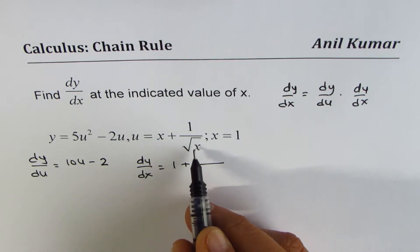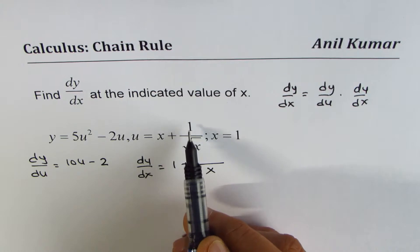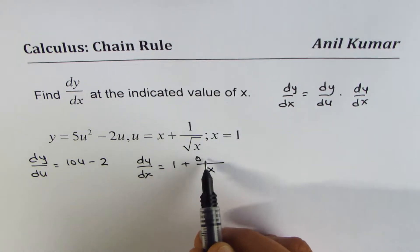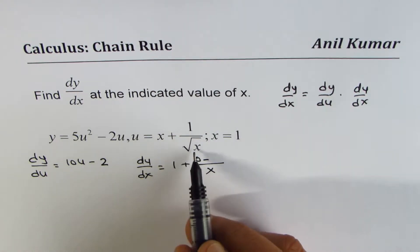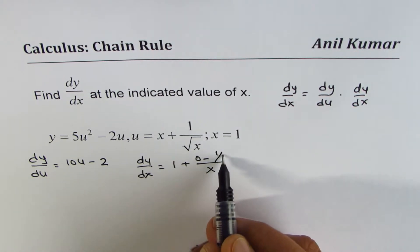So denominator square is x. Derivative of 1 is 0. So the first term is 0 minus 1 times derivative of square root x, which is 1 over 2 square root x.